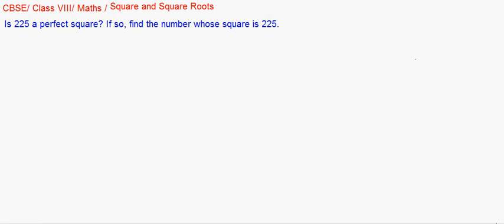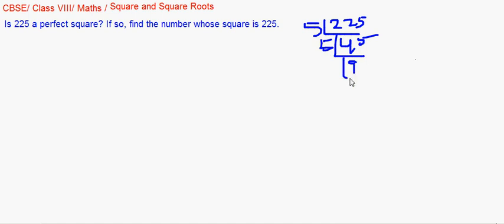To solve this, we first express 225 as a product of its prime factors. Doing the division, we find the prime factorization of 225 is 5 × 5 × 3 × 3.